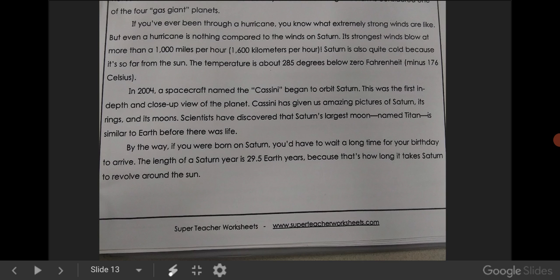In 2004, the spacecraft named the Cassini began to orbit Saturn. This was the first in-depth and close-up view of the planet. Cassini has given us amazing pictures of Saturn, its rings, and its moons. Scientists have discovered that Saturn's largest moon, named Titan, is similar to Earth before there was life.